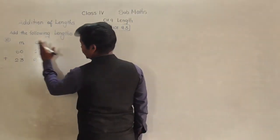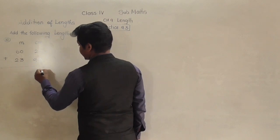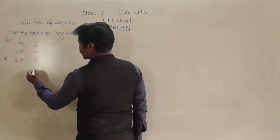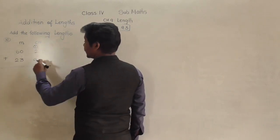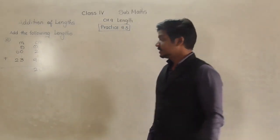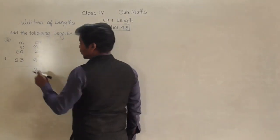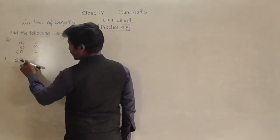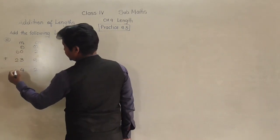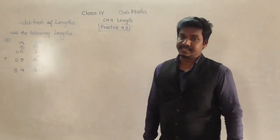Now let us add. First we add the centimeter column from the right side. 5 plus 5 is 10, so 0 comes down and 1 is carried. 9 plus 1 is 10, and 2 more makes 12, so 2 comes down and 1 carries over to the meter column. Then 0 plus 3 is 3, plus 1 carried is 4. And 6 plus 2 is 8. So the answer is 84 meter and 20 centimeter.